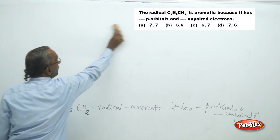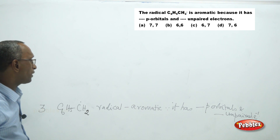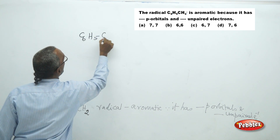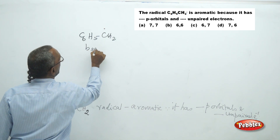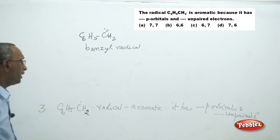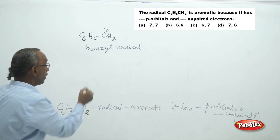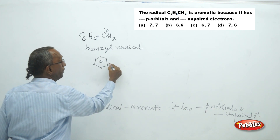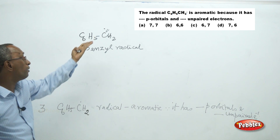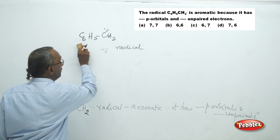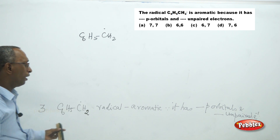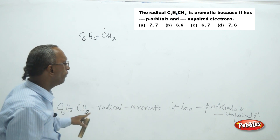The third question is based on the presence of pi electrons and p orbitals. The question involves C6H5–CH2 dot, which is called the benzyl radical. The dot means an unpaired electron. This benzyl radical is aromatic. It is given in this form — it may not be immediately obvious as aromatic. The question asks: this radical C6H5–CH2 radical is aromatic because it has how many p orbitals and how many unpaired electrons?